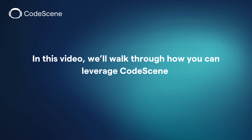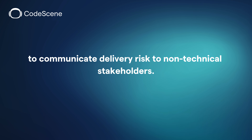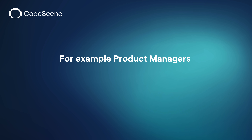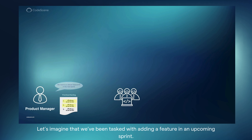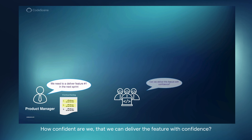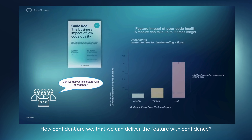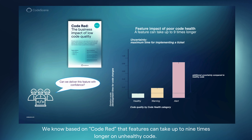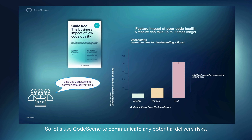In this video, we will walk through how you can leverage Codescene to communicate delivery risk to non-technical stakeholders, for example, product managers. Let's imagine we've been tasked with adding a new feature in an upcoming sprint. How confident are we that we can deliver the feature with confidence? We know, based on Code Red, that features can take up to nine times longer on unhealthy code. So let's use Codescene to communicate any potential delivery risks.